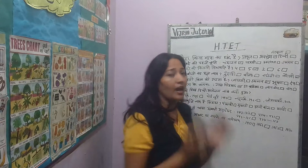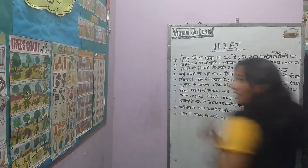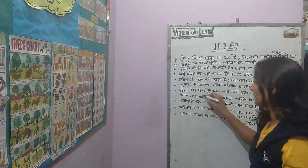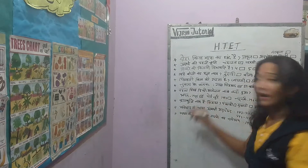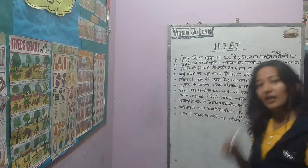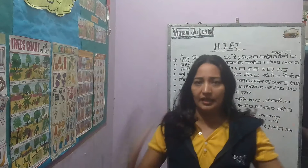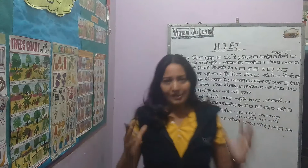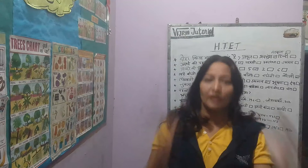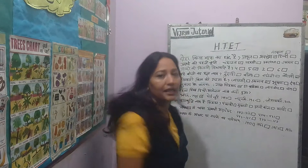Pahla Vishwa Hindi Sammelan — when and where was the first World Hindi Conference held? It was held in India in 1975. In this conference, representatives from different countries gather to discuss the development and promotion of the Hindi language.